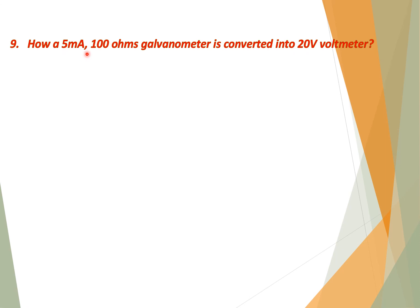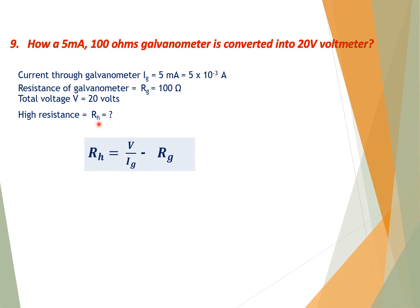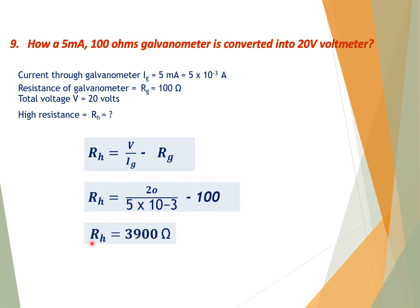Question number 9: How is a 5 milliampere, 100 ohms galvanometer converted into a 20-volt voltmeter? Given: I_G = 5 mA, R_G = 100 Ω, V = 20 V. By connecting a high resistance in series with the galvanometer, we can convert it into a voltmeter. The formula is R_H = V / I_G − R_G. Putting in the values, we get R_H = 3900 Ω. Using this high resistance converts the galvanometer into a 20-volt voltmeter.